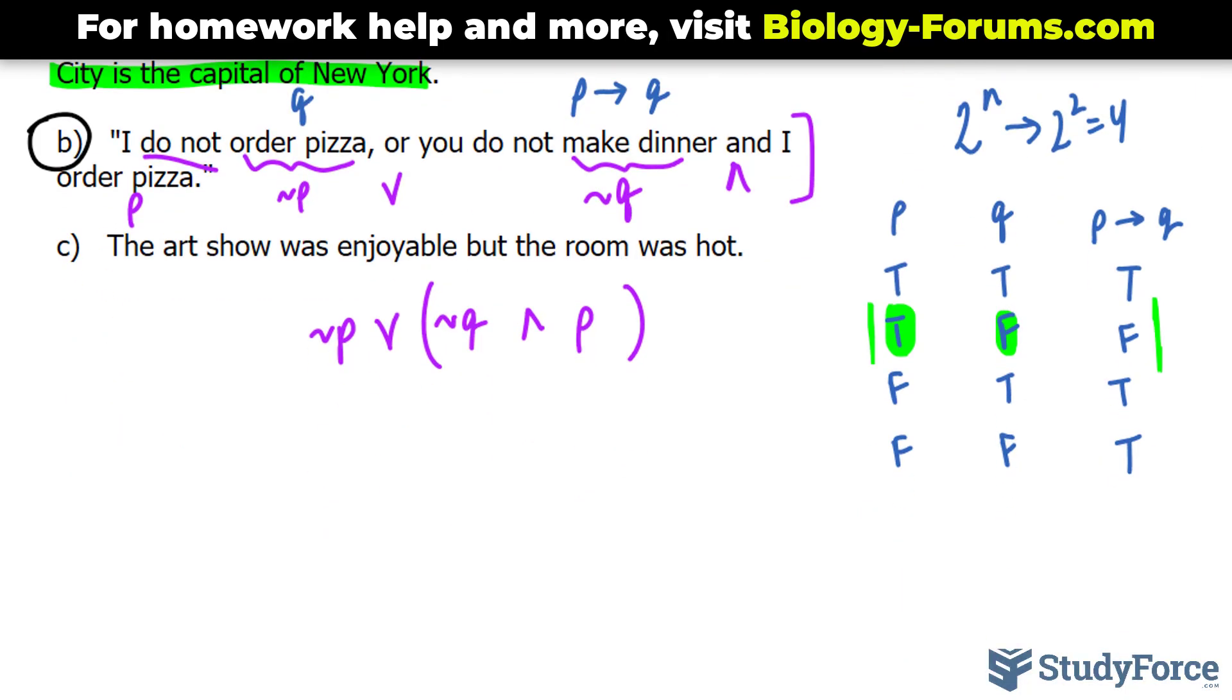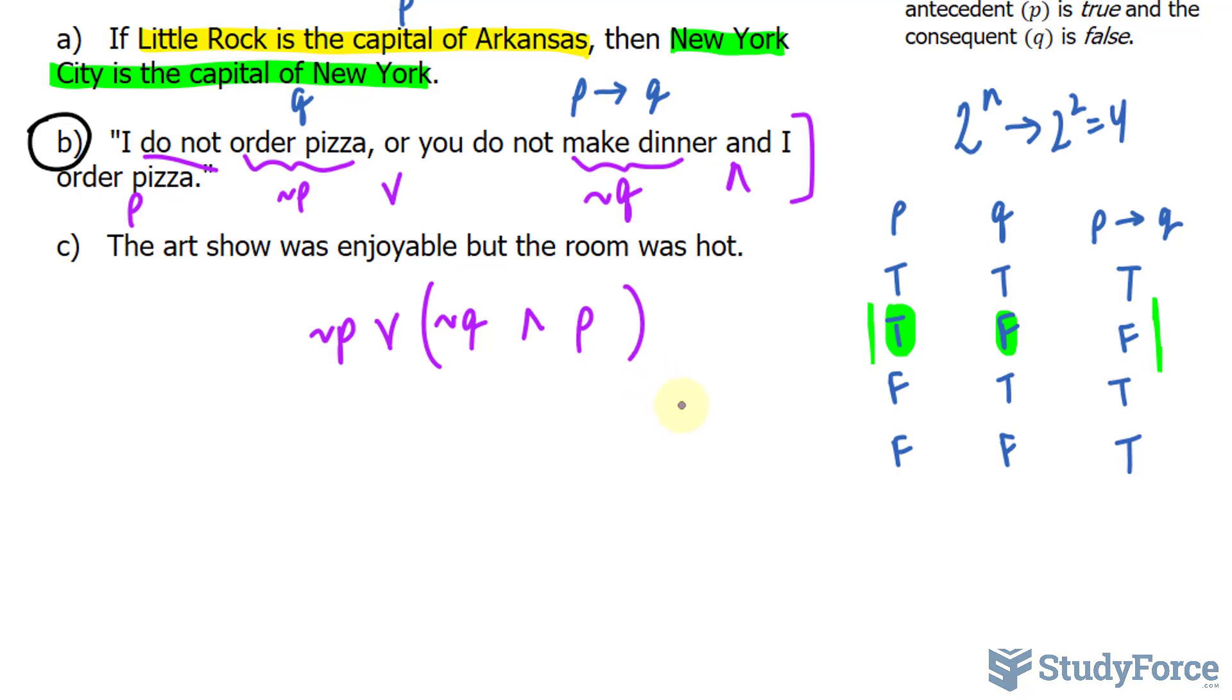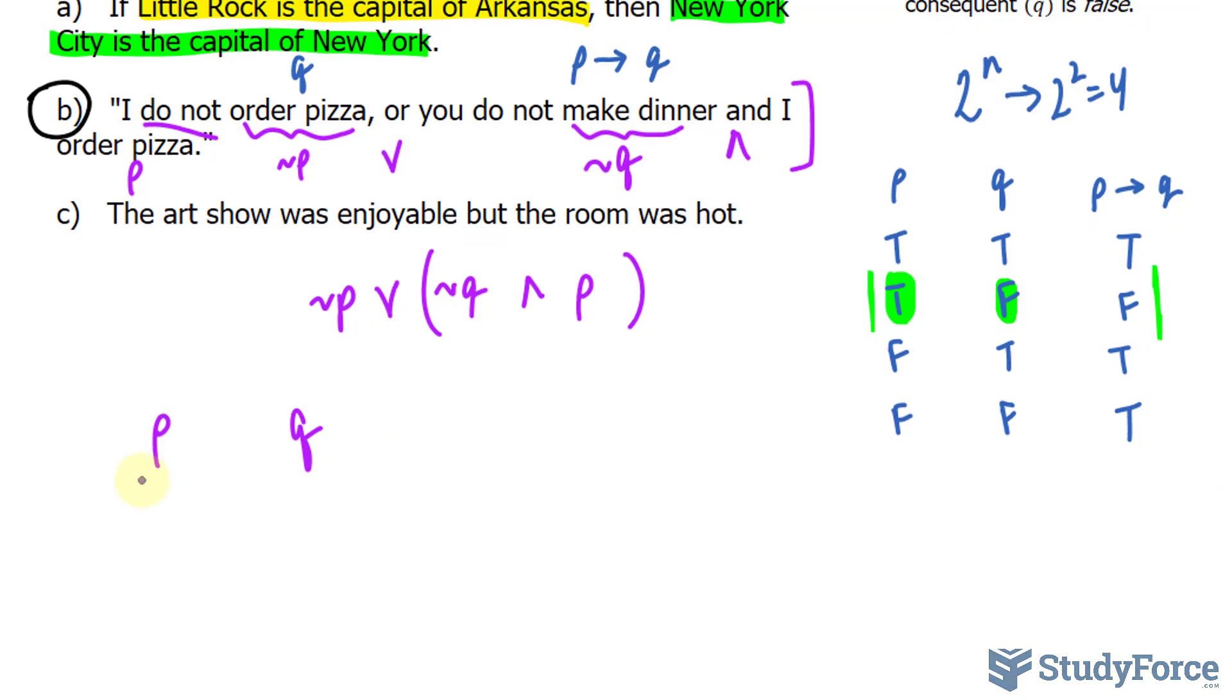Now we have to create a truth table for this. Since we have P and Q, we use the formula 2 to the power of N to tell us the total number of combinations. 2 to the power of 2, because of the two letters, is 4. So I'll write down P and Q. Those are my columns, my initial columns.